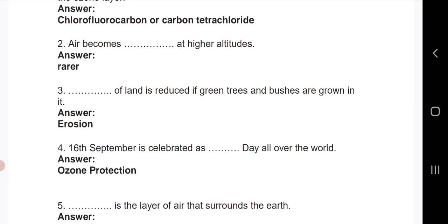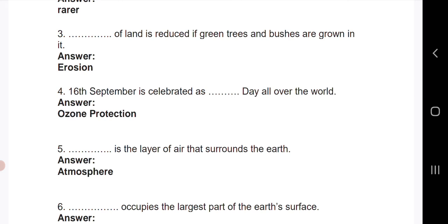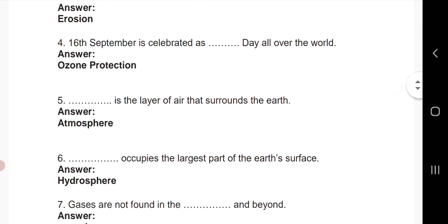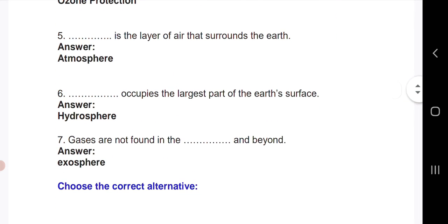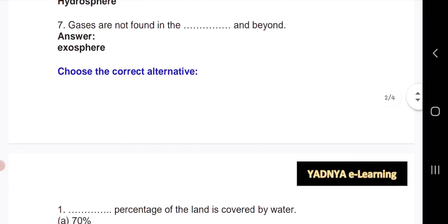Third: erosion of land is reduced if green trees and bushes are grown in it. Fourth: 16th September is celebrated as Ozone Protection Day all over the world. Fifth: atmosphere is the layer of air that surrounds the earth. Next: hydrosphere occupies the largest part of the earth's surface. Gases are not found in the exosphere and beyond.